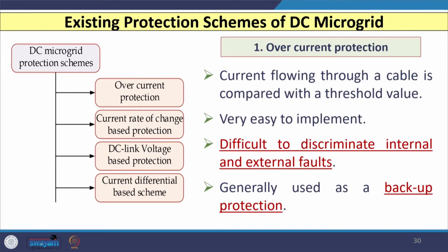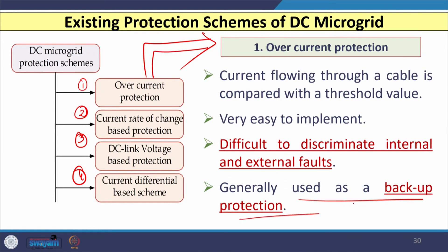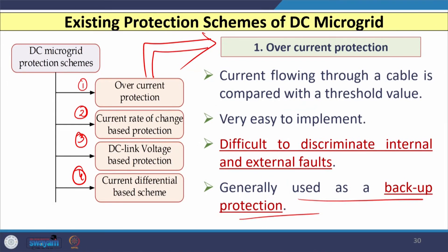For DC microgrid protection, four types of schemes are used. The first is overcurrent protection, where the current through a cable is compared with a threshold or pickup setting — easy to implement, but difficult to discriminate internal and external faults due to bidirectional power flow. This scheme is generally used as backup protection, not primary, because it is difficult to discriminate fault direction and instantaneous operation is not possible with this scheme.